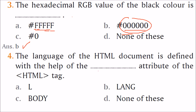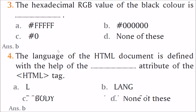Which attribute of the HTML tag is used to define the language of an HTML document? The answer is B — the lang attribute is used to define the language of the HTML document.